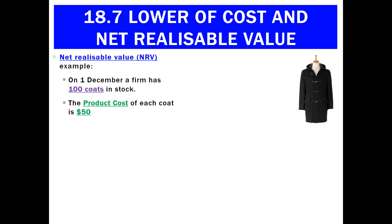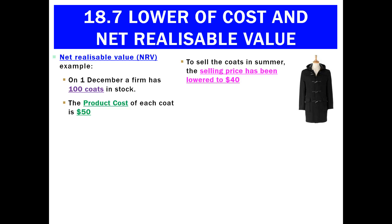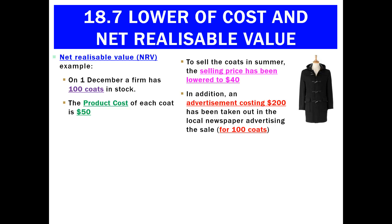Let's look at an example. It's the start of December and I've got a hundred coats in stock — going to have a hard time selling them because it's the start of summer. Each coat had a product cost of $50. I'm going to have to lower the selling price to $40 in order to sell them in the middle of summer. And to do so, I'm going to have to take out an ad for $200 saying come buy these coats that are on sale, and that covers a hundred coats.